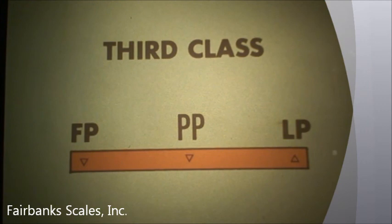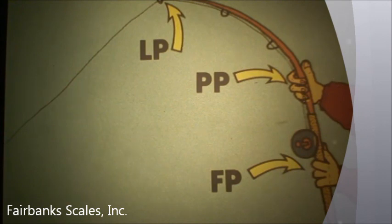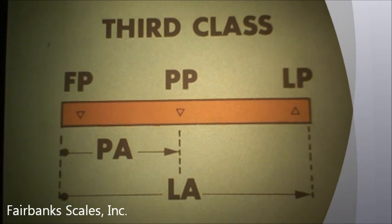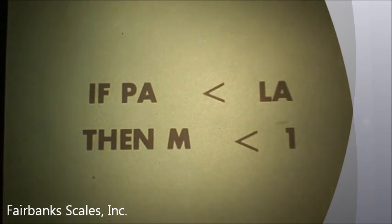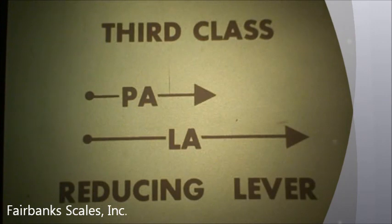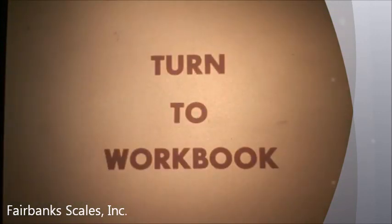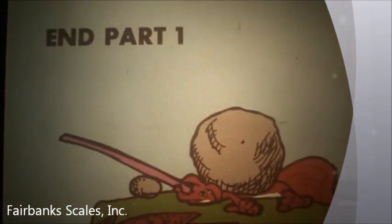A third class lever has the power point between the fulcrum point and the load point. A fishing rod is an example of a third class lever. Since the power point is between the fulcrum point and the load point, the power arm will always be shorter than the load arm, meaning a third class lever will always have a multiple less than one. By definition, a third class lever can only be a reducing lever. Stop the tape and do the exercises in section four. You have now completed part one of basic levers. For an explanation of compound levers and lever systems, see basic levers, part two.